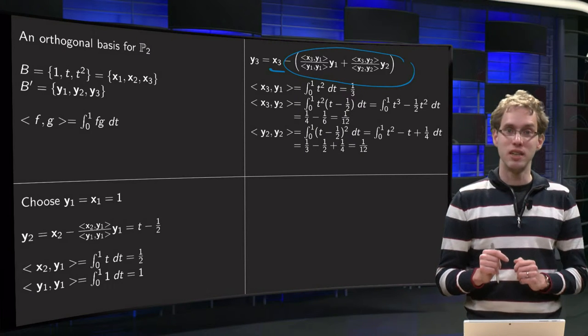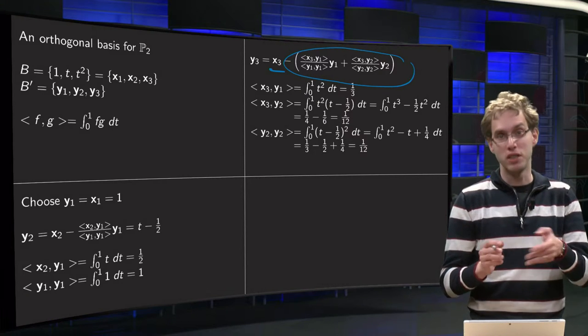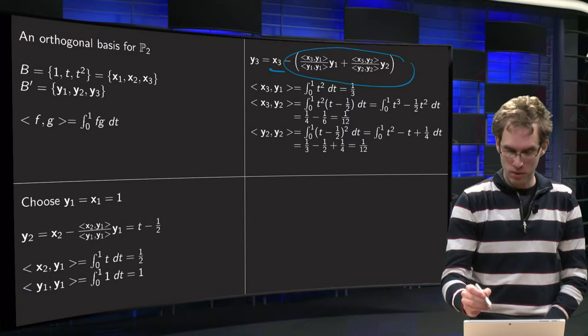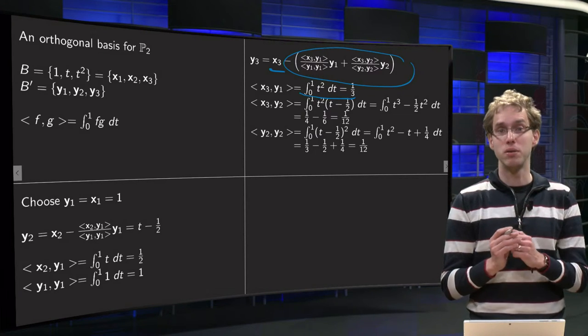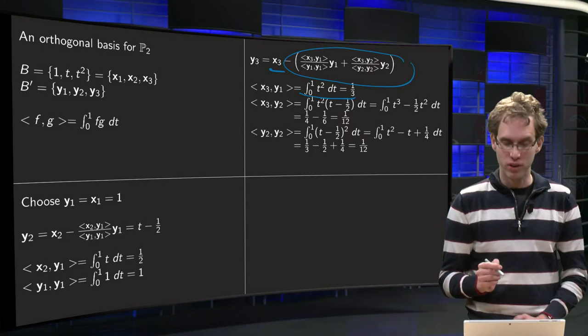Let's start with x3 inner product y1. That one is nice, because y1 is just 1, so x3 inner product y1 equals t squared times 1, and then integrate, so we have the integral of t squared dt between 0 and 1, one third t cubed yields one third.